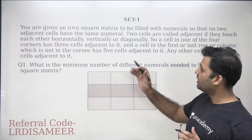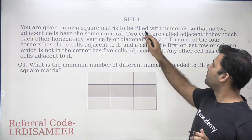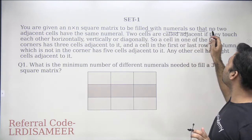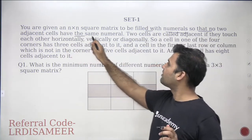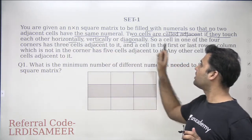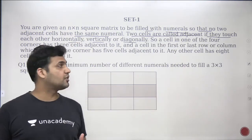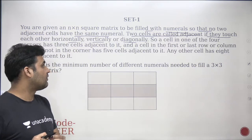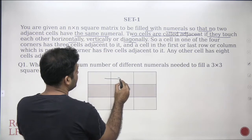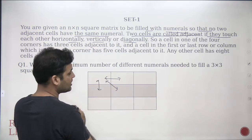For example, here in this case, the information says you are given an N into N square matrix to be filled. You are supposed to fill it with numerals so that no two adjacent cells have the same numbers. And two cells are called adjacent if they touch each other horizontally, vertically or diagonally. This is the main part that you should try to make yourself understand — what is the meaning of the word adjacent.